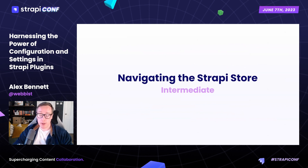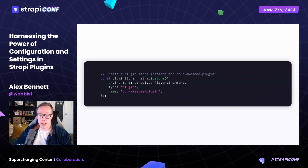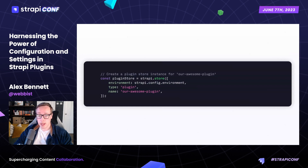Let's dive into the Strapi Store. This powerful feature allows us to easily manage our plugin's configurations and settings. To get started, we create a plugin store instance specifically for our plugin, which gives us direct access to the Strapi Store. Using a data store like the Strapi Store is the recommended approach for updating configurations in production — it provides scalability and is multi-server friendly, making it a great choice for managing settings.